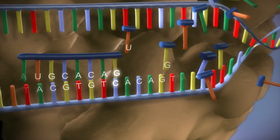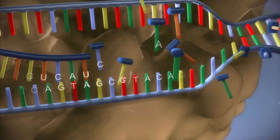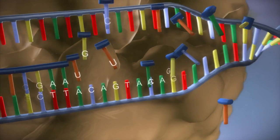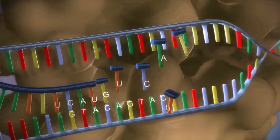The DNA code determines the order in which the free bases are added to the messenger RNA. This process is called transcription.